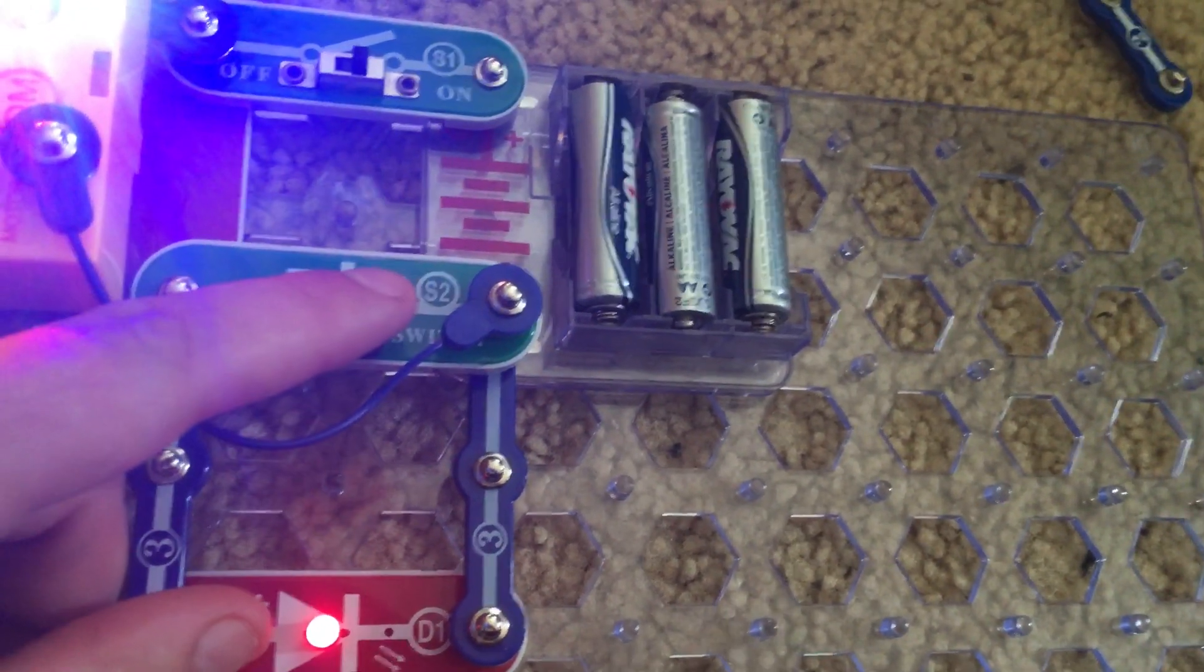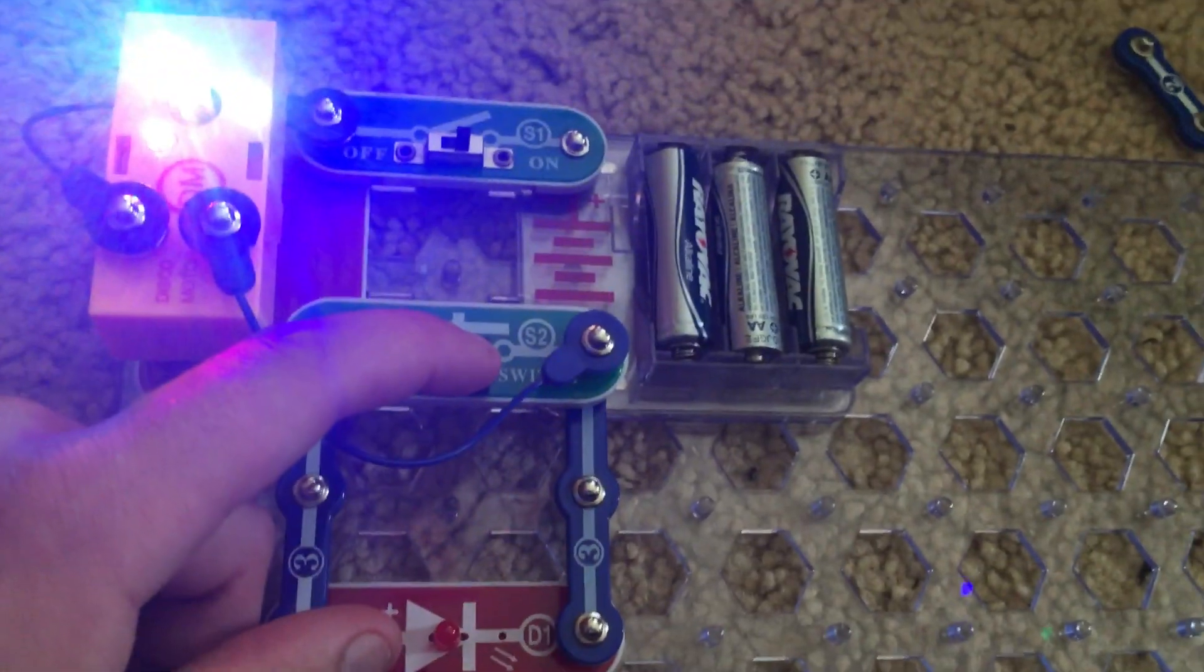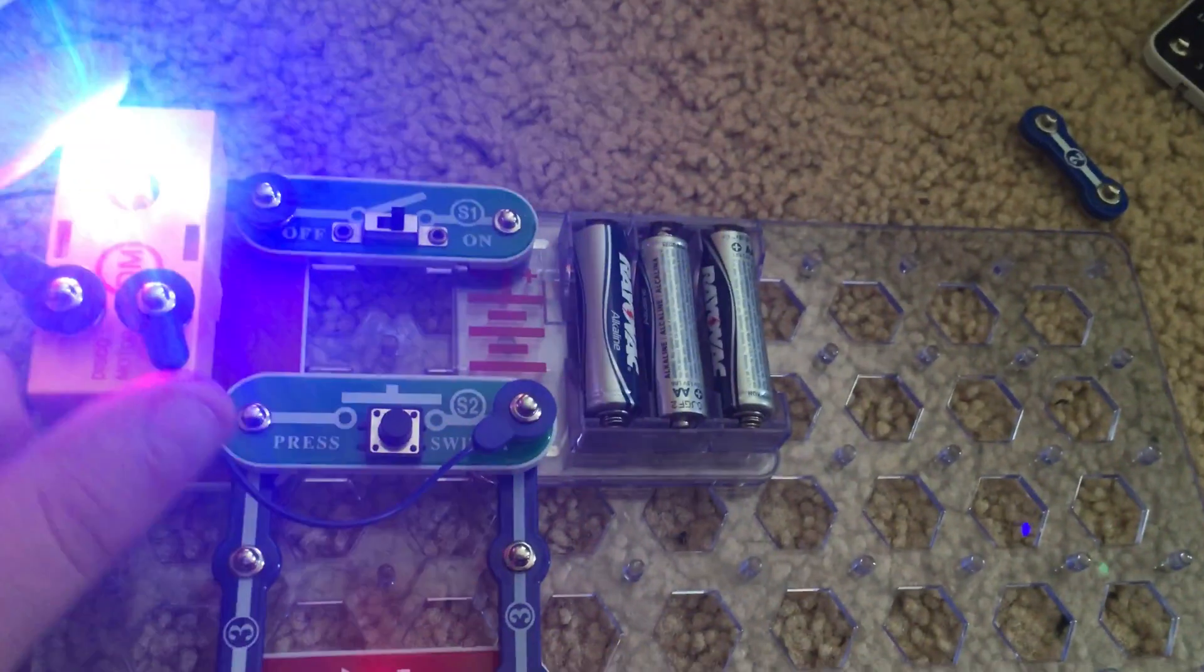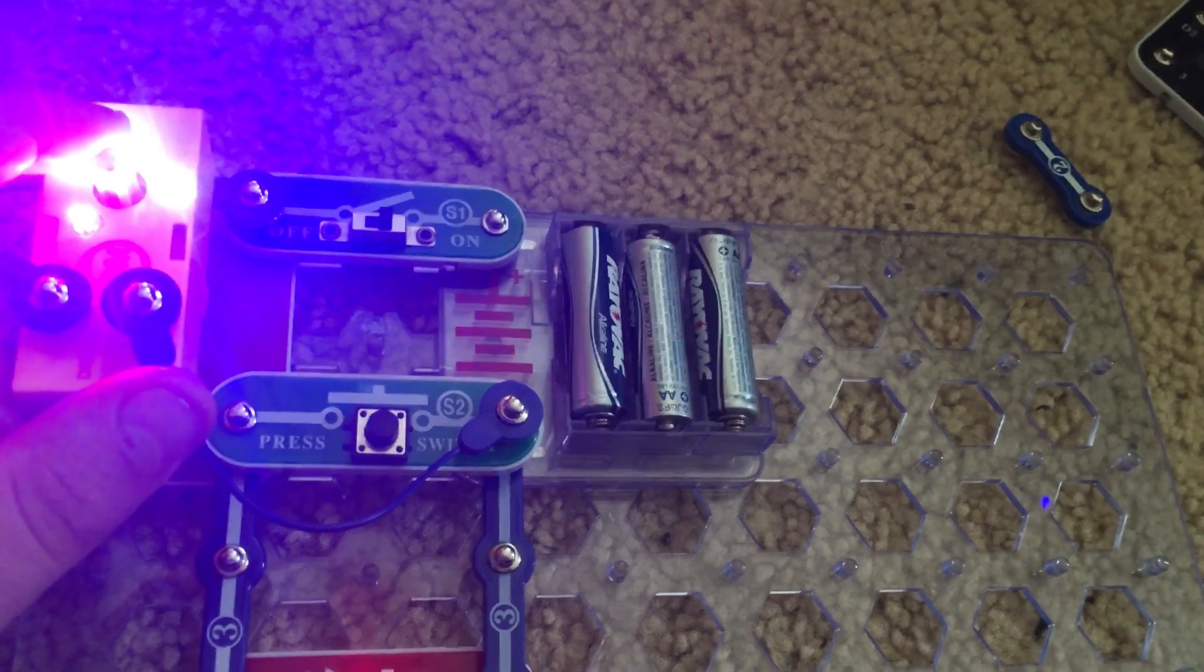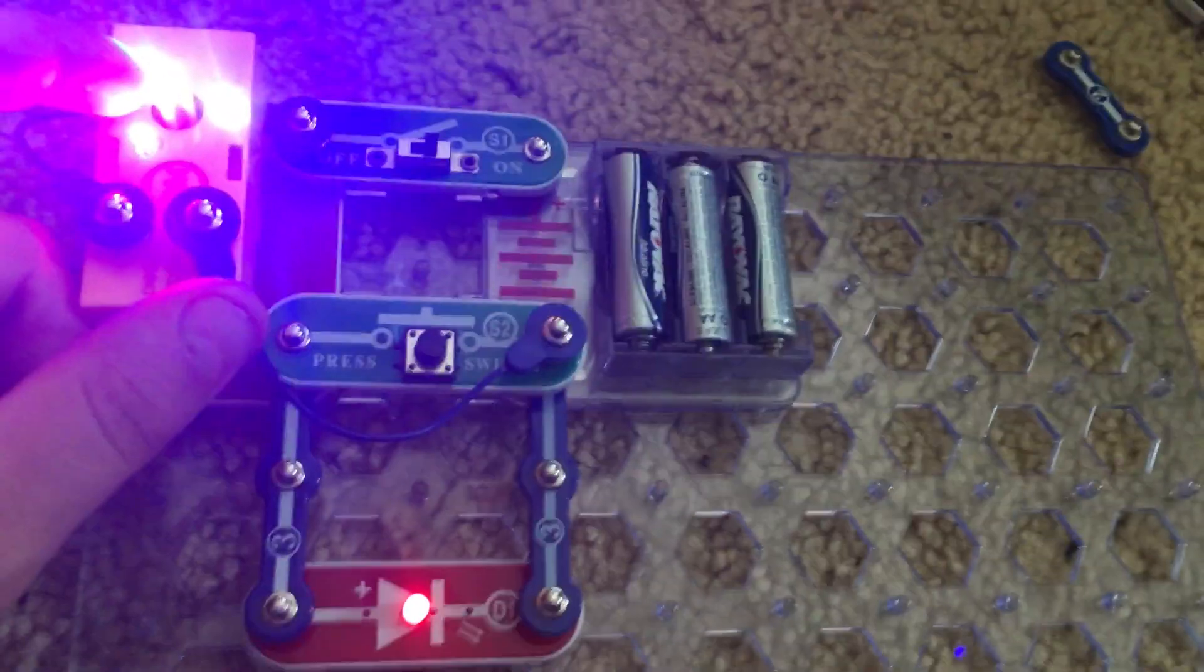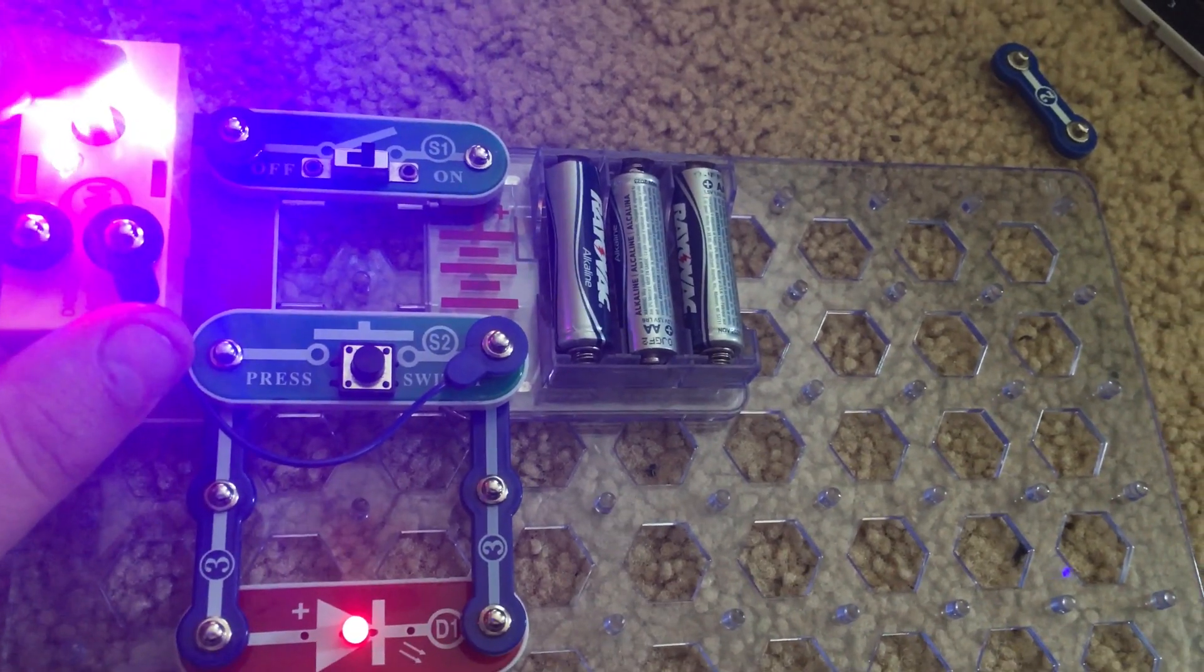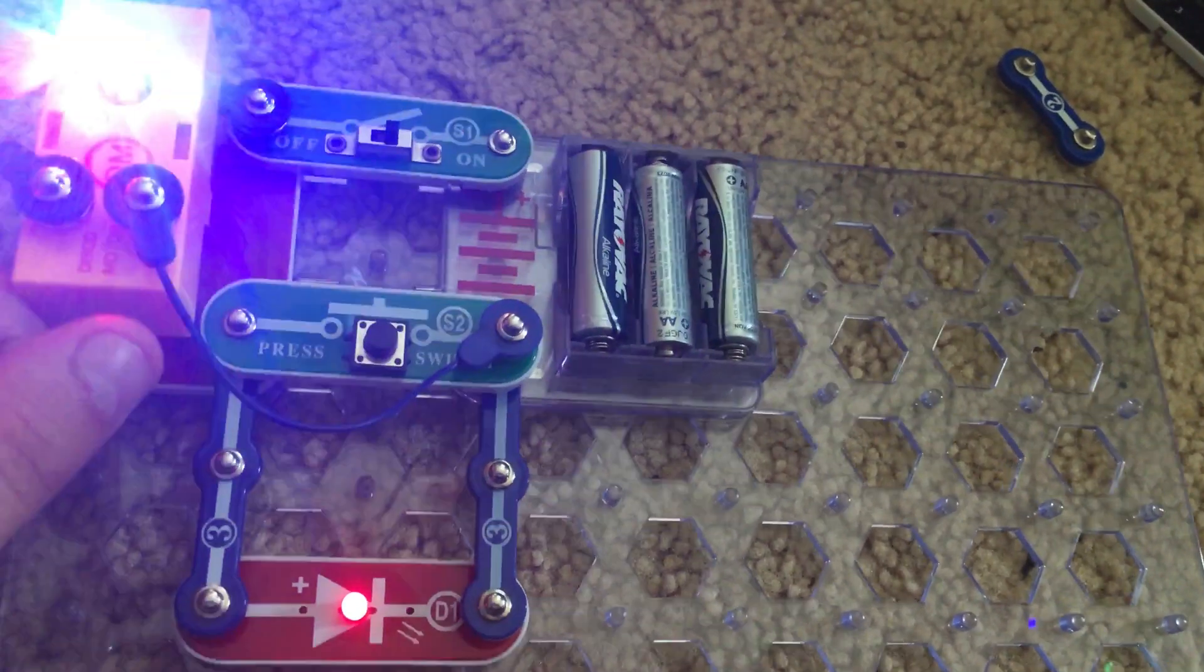When you hold down the press switch, you are bypassing the LED completely. Sometimes a burst of electricity will get the motor to rotate slowly even if the red LED is limiting it when it is not being bypassed.